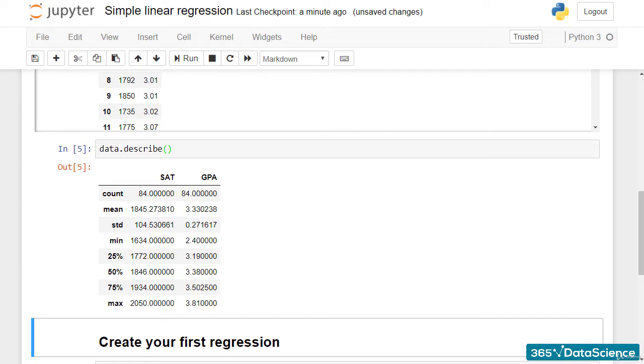Let's explore the problem. We have a sample of 84 students who have studied in college. Their total SAT scores include critical reading, mathematics, and writing, while the GPA is their grade point average they had at graduation.